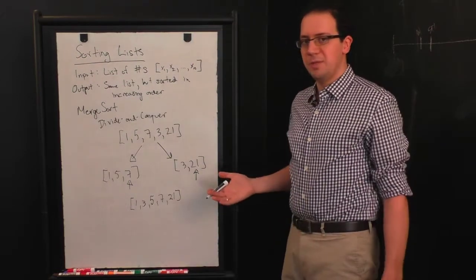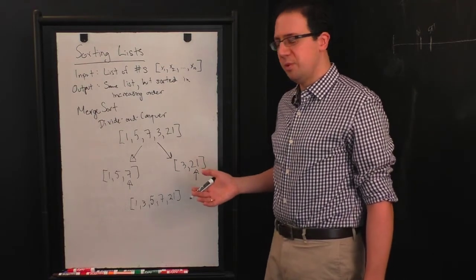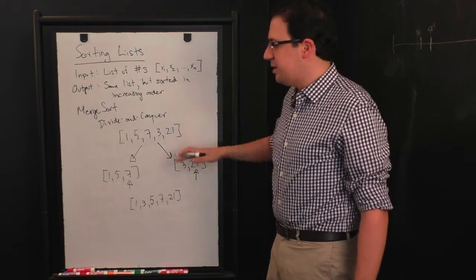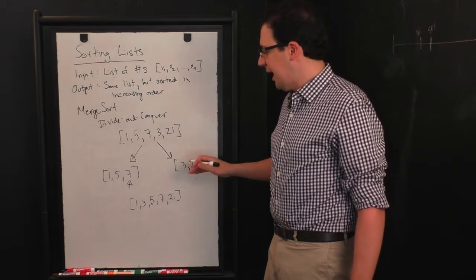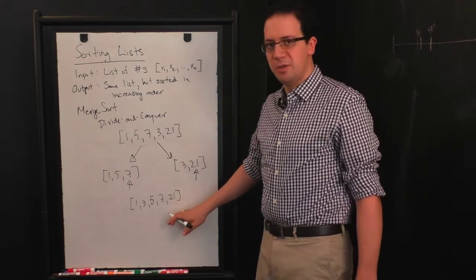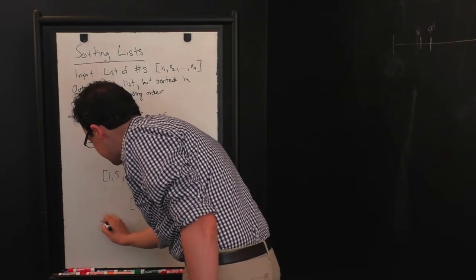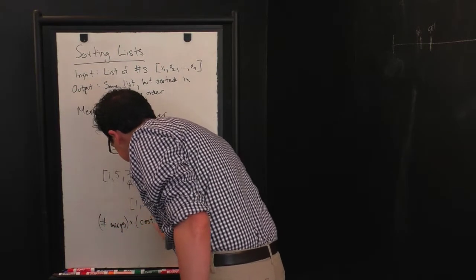So now the question is, why was this actually better? And again, the analysis is fairly simple. The question is, how many times do we divide, which is the same as how many times we're going to merge, and how much does it cost me to do the merge, right? So the analysis here is going to be essentially number of merges times cost to merge.